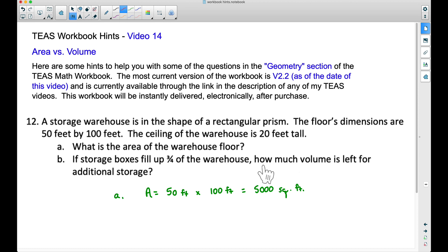Not to mention it does say how much volume is left. Let's be careful there. So for question B, to find the volume of a rectangular prism, a rectangular box, we take length times width times height. So essentially, we're going to take 50 times 100. And now we're going to multiply it by this height, 20 feet.